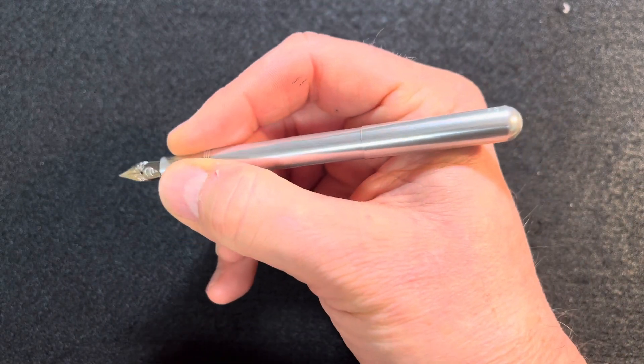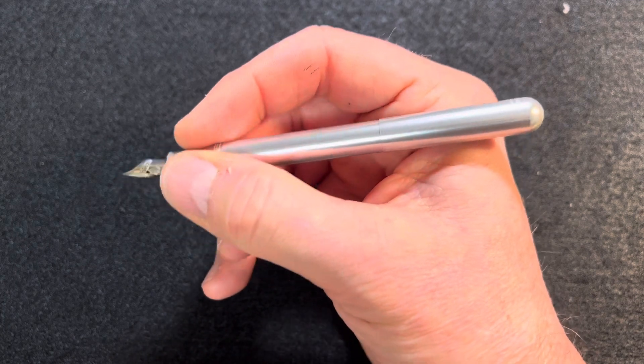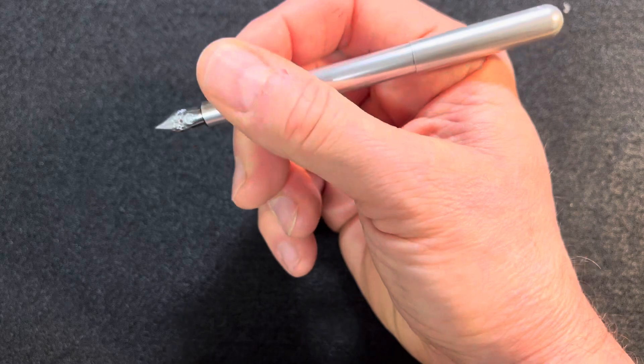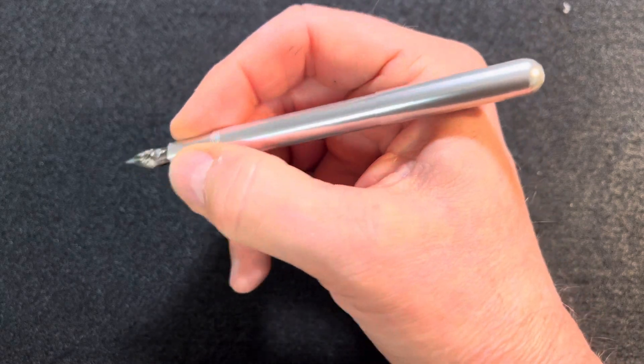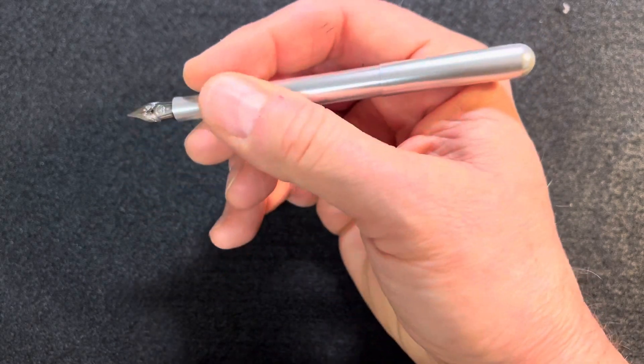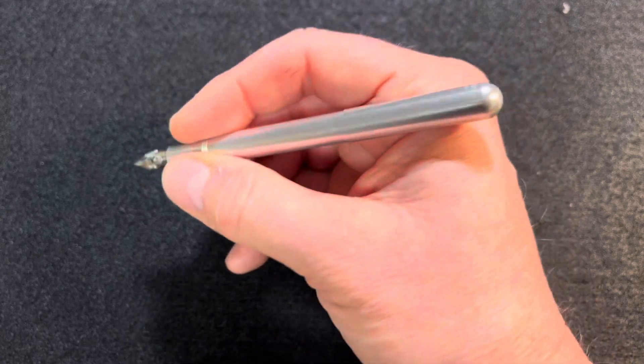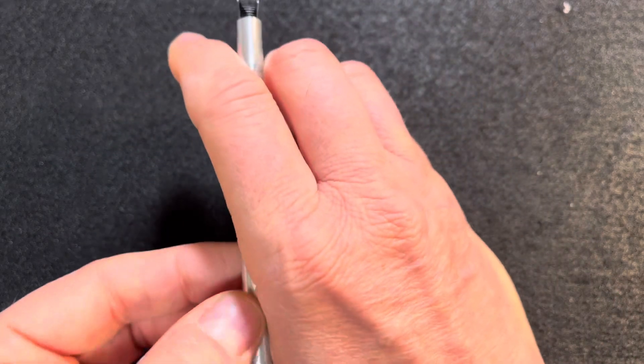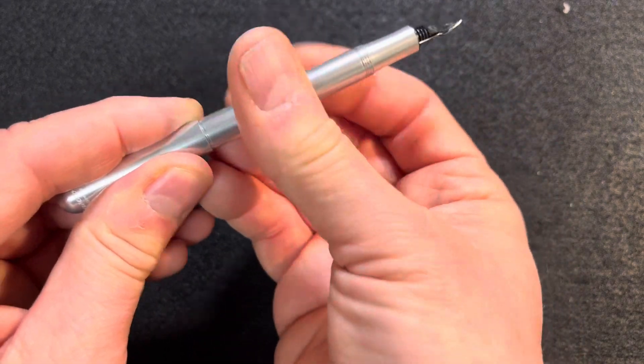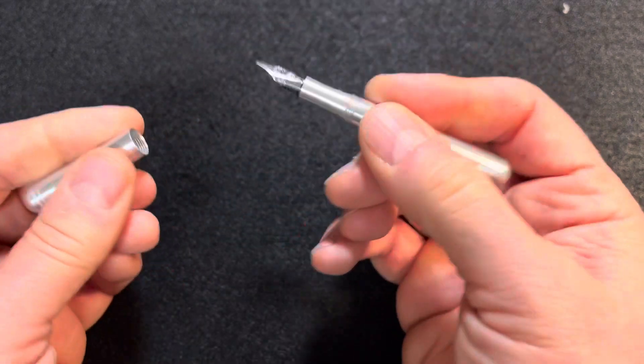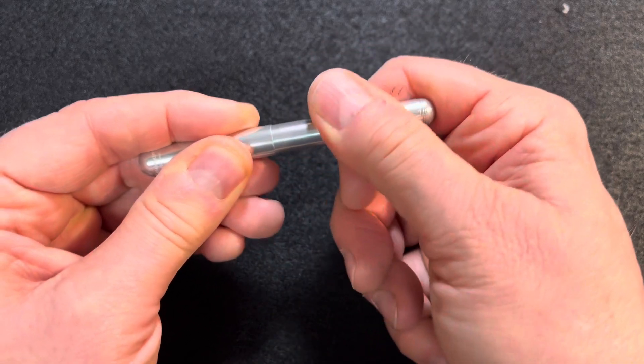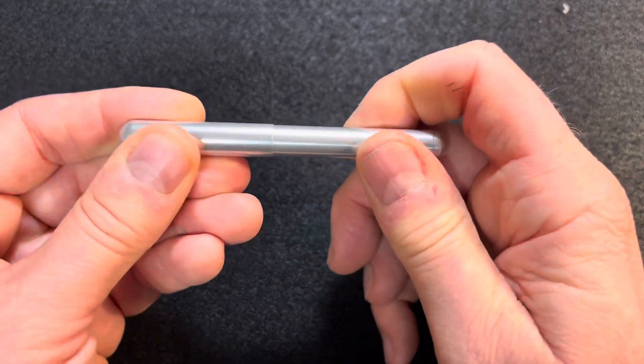So, if my hands were any bigger, I wear a large size glove, I would say my hands are medium. If my hands were any bigger, that might not be comfortable. And it doesn't feel as balanced as a longer pen. But, you can just throw it in a pocket without any worry. There's very little worry of having an ink disaster.